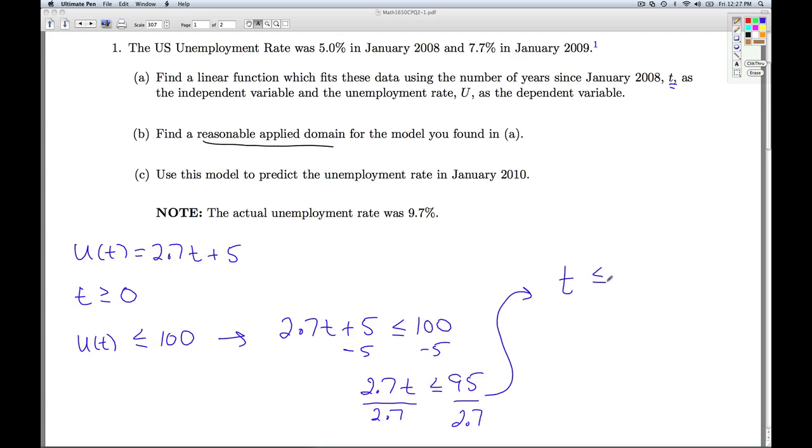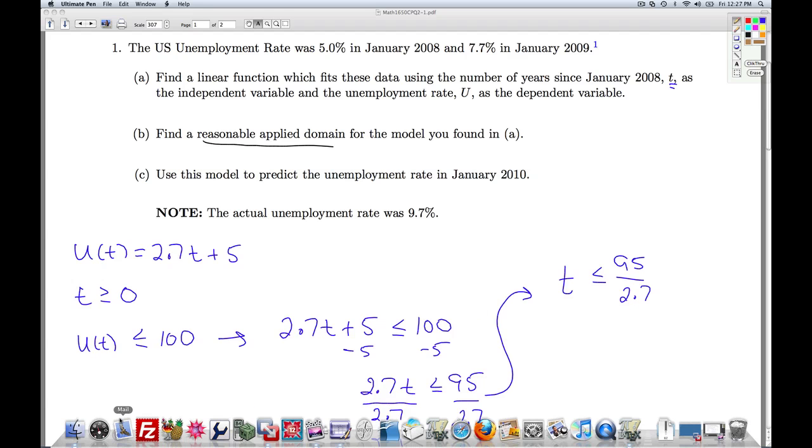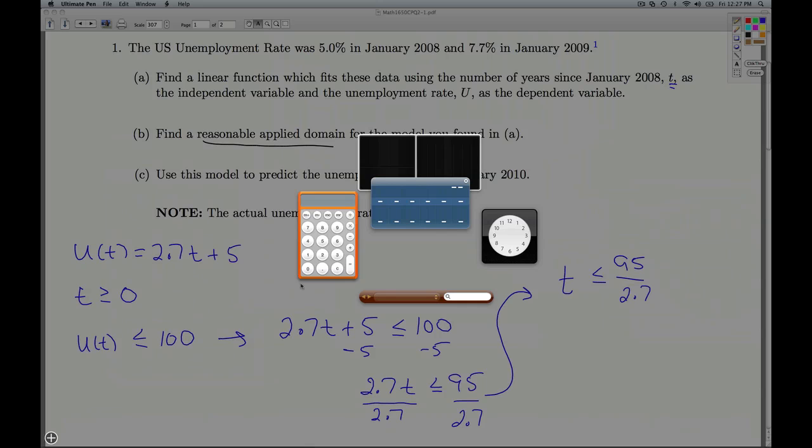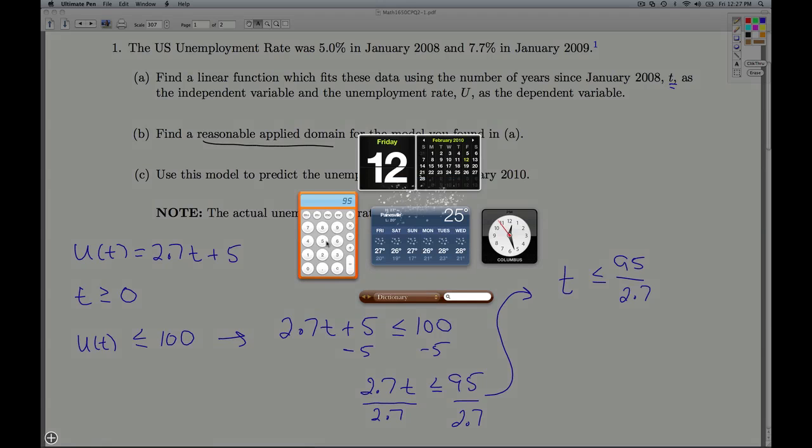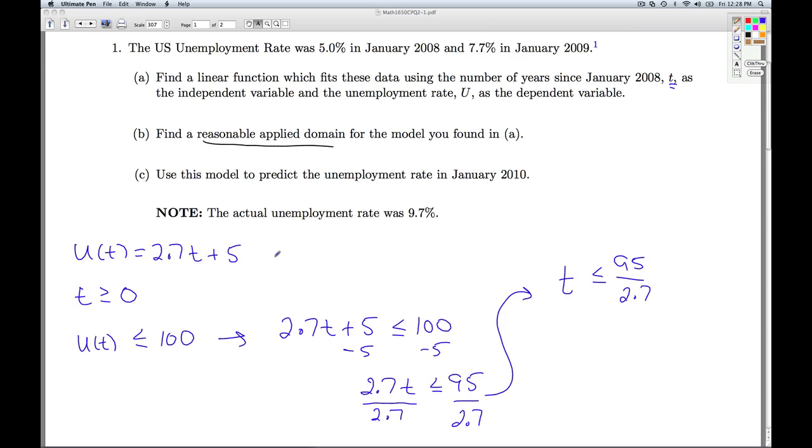So, I get t is less than or equal to 95 over 2.7. And we can go off to the calculator and we can approximate what that's going to be. So, 95 divided by 2.7, we'll say is less than or equal to 35.18.